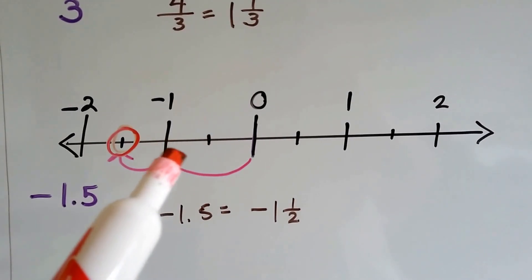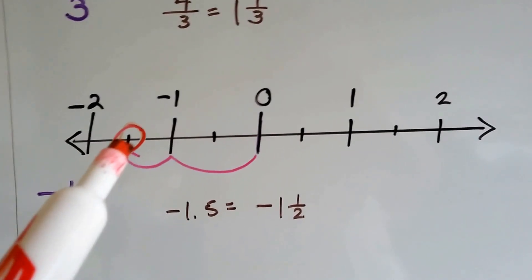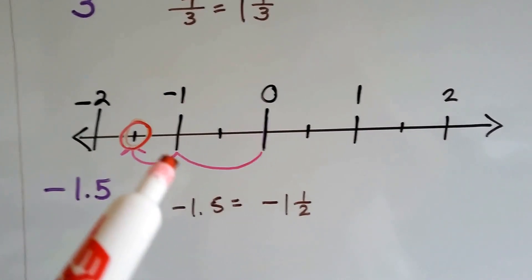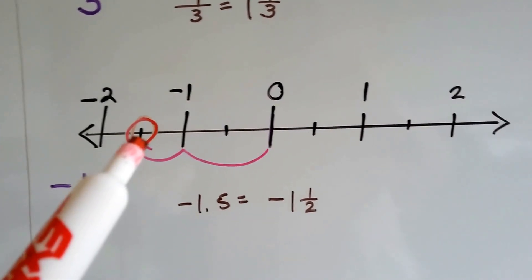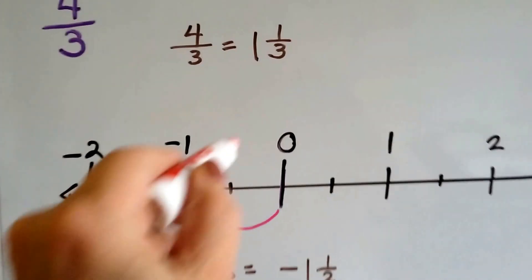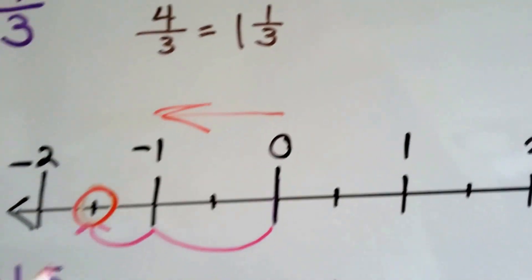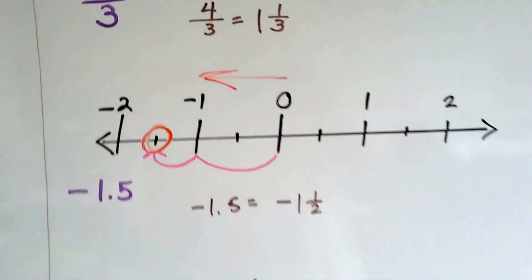And each line in between these whole numbers is going to be the half. So we would go negative one and a half. We know we're going to go in this direction because of the negative sign. So we're going to be on the negative side.